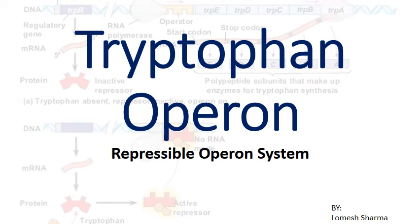Hello everyone. In the last lecture we discussed the inducible operon system, that is the lac operon. Today we will discuss the tryptophan operon, which is also known as a repressible operon system. Tryptophan is an aromatic amino acid required by E. coli for protein synthesis. Its synthesis is controlled by various structural genes, and if it is already present in sufficient amount it binds with the repressor coded by the regulatory gene, activates that repressor, and stops tryptophan synthesis. That is why tryptophan acts as a co-repressor, and this system is known as a repressible operon.